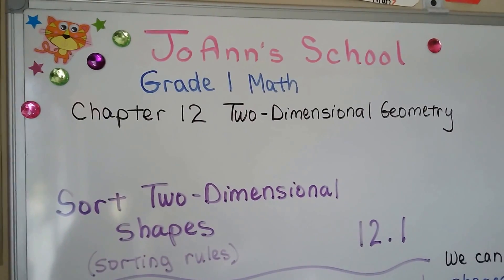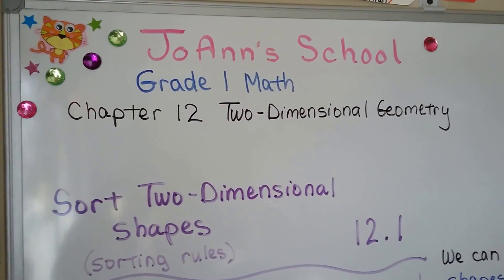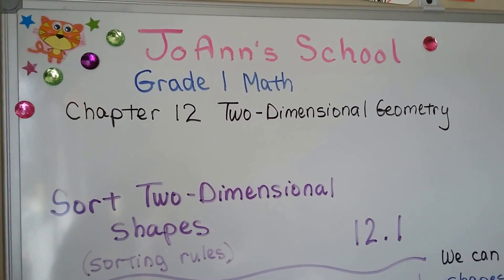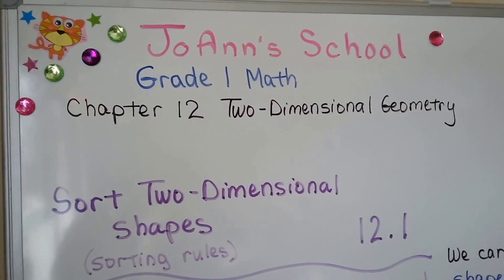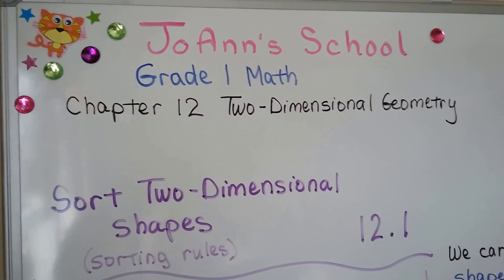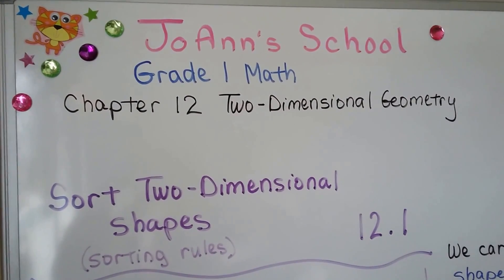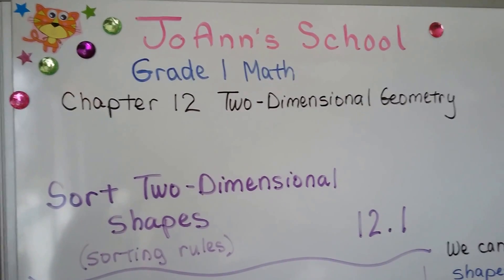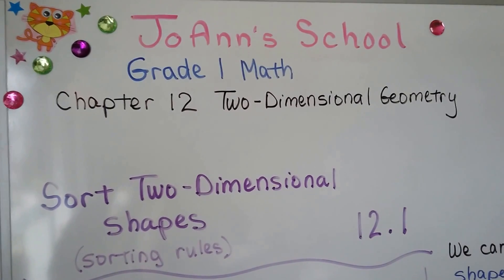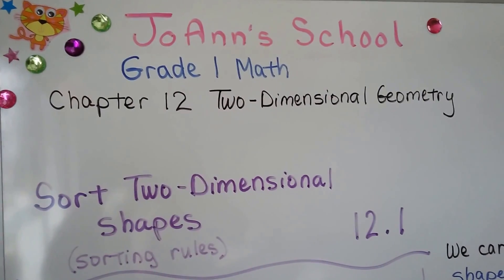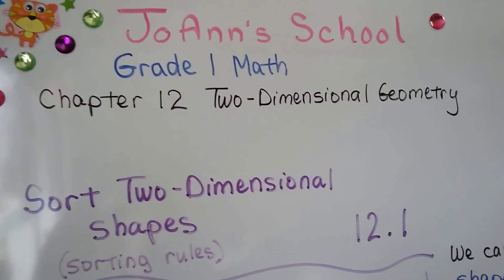We're now in Chapter 12, which is all about two-dimensional geometry, and we're going to sort two-dimensional shapes using sorting rules. This is the last chapter of grade one math.